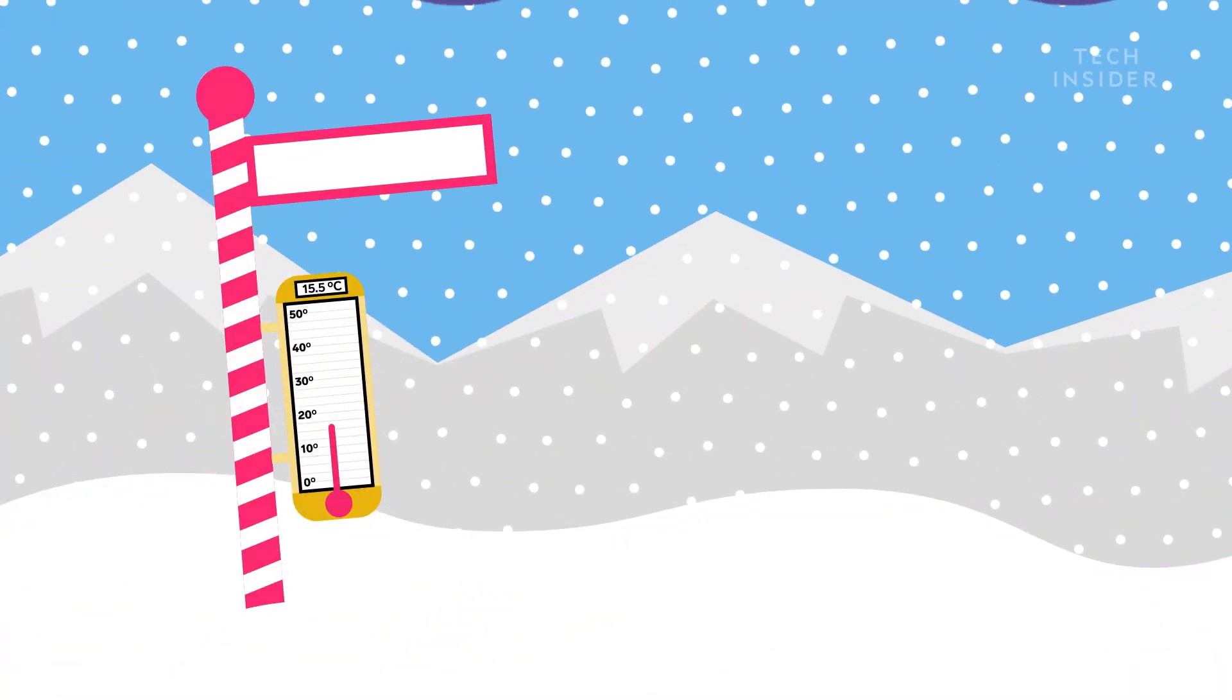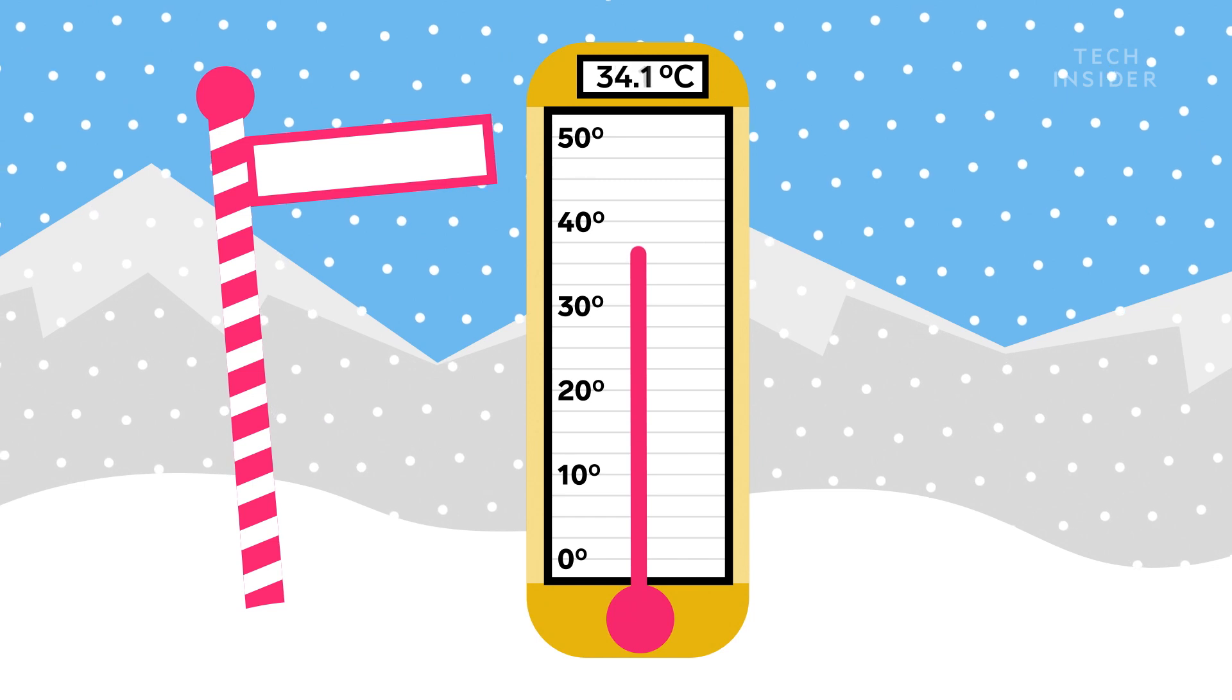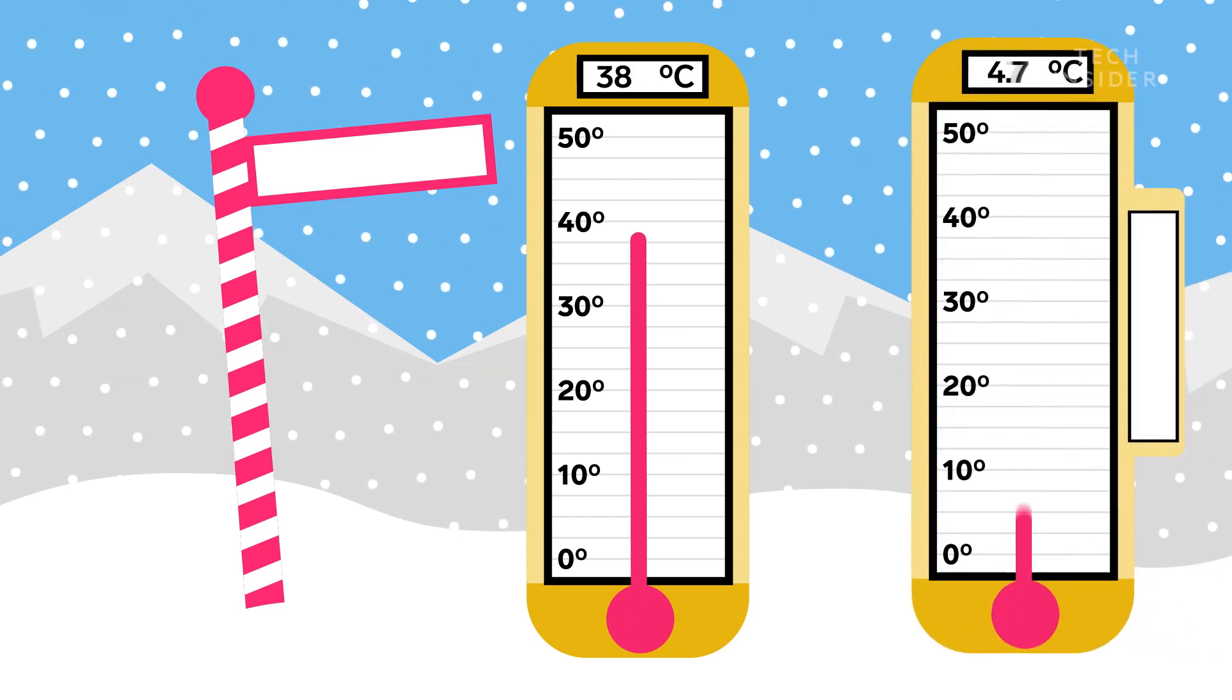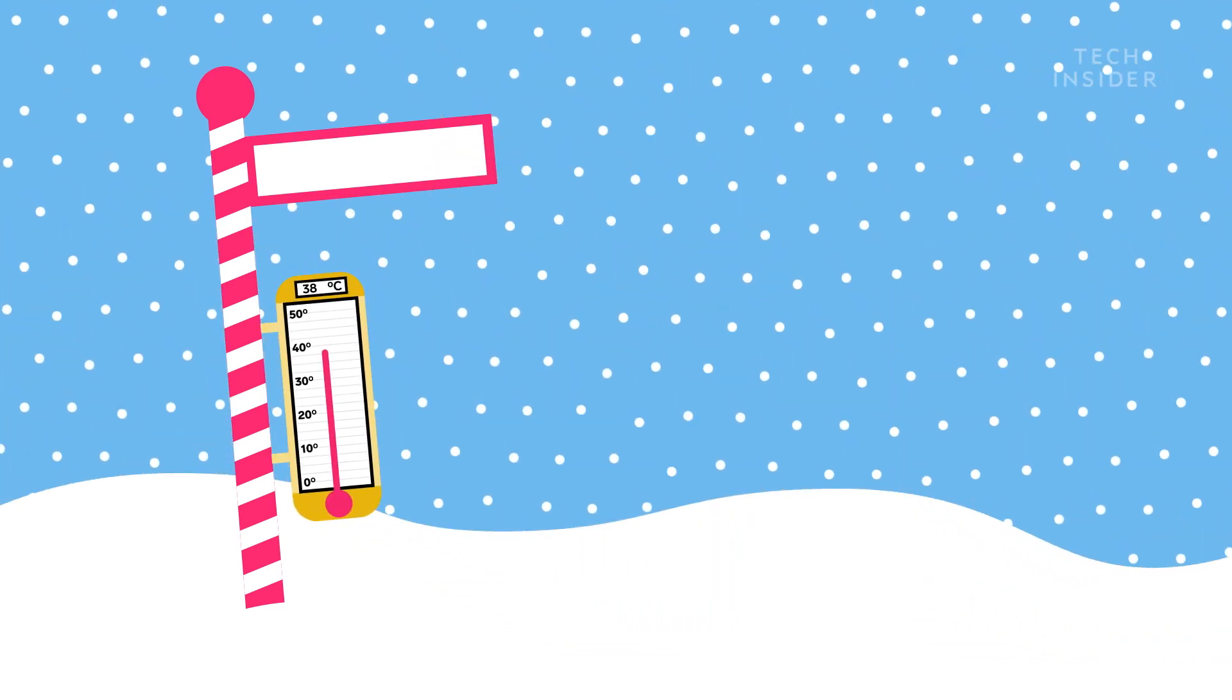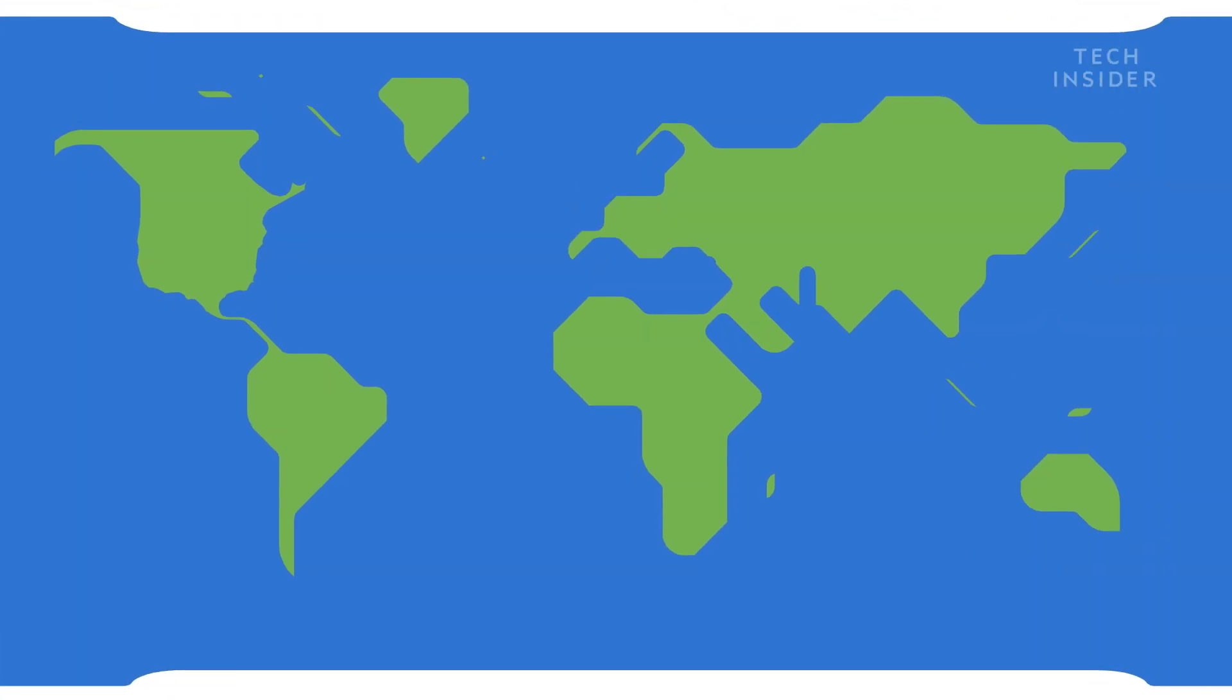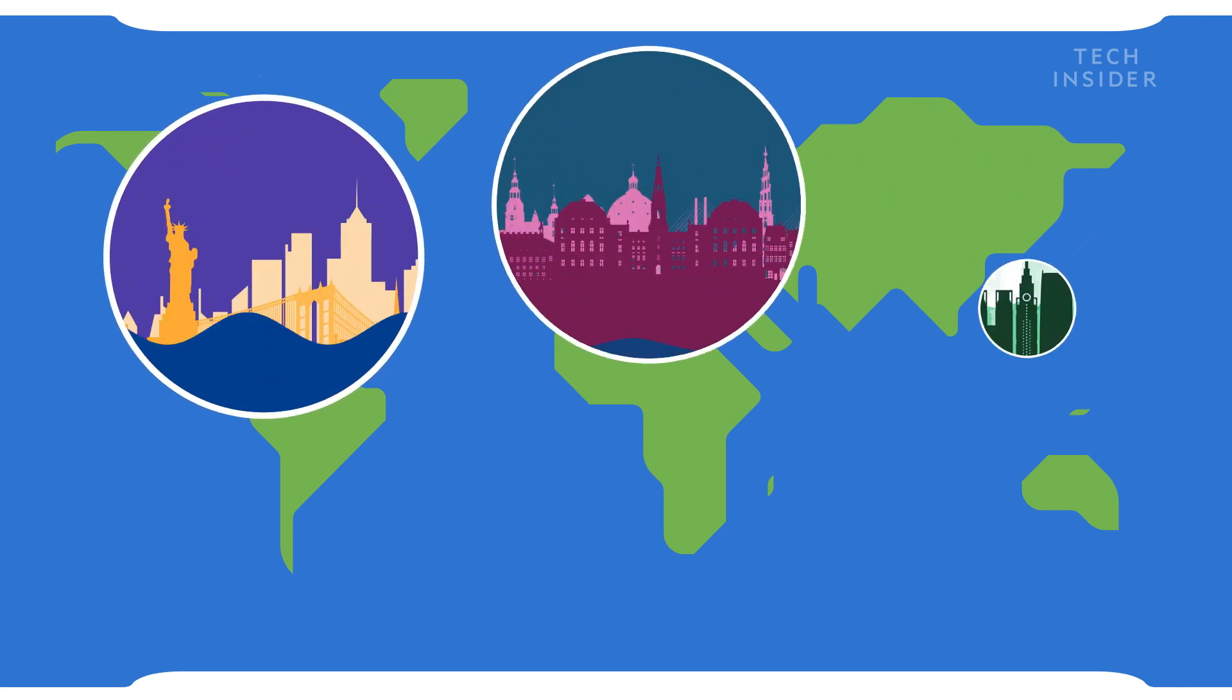But that's less of a worry than the floods. Temperatures at the North Pole would more than double to 38 degrees Celsius from 15.5 degrees Celsius. That's hotter than temperatures at the equator today. As a result, Greenland's ice cap would melt, causing sea levels to rise by 7 meters and flood nearly every coastal city on Earth. Say goodbye to New York, Copenhagen, and Tokyo.